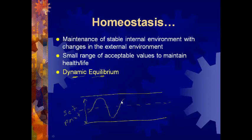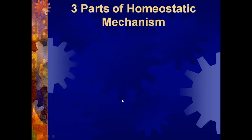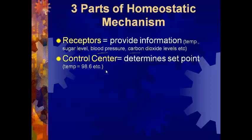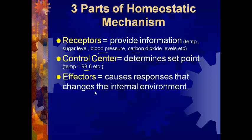There are three parts to a homeostatic mechanism. The first part is called receptors. Receptors provide information about your sugar level, blood pressure, carbon dioxide levels, and body temperature. Receptors send signals to the control center, which is usually your brain. There are different parts of your brain that serve as the control center — one part called the hypothalamus actually determines the set point of your body temperature at 98.6. The third part is called effectors — they cause a response that changes the environment to maintain homeostasis. Receptors provide information to the control center, which then sends a response to the effectors to bring your body back towards set point.